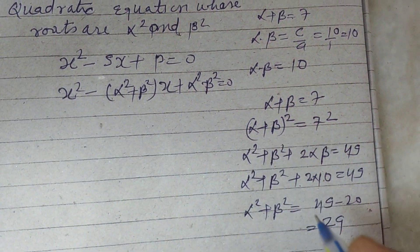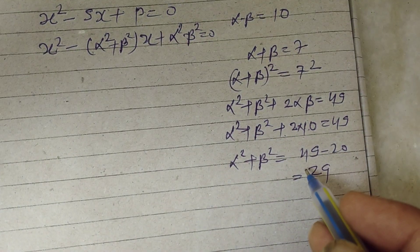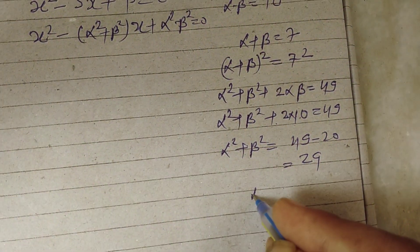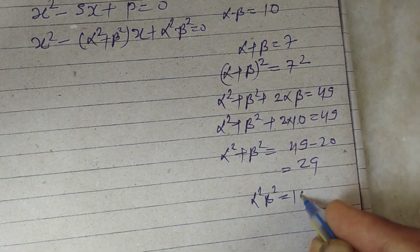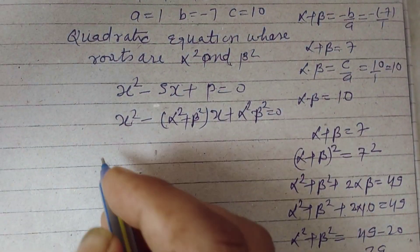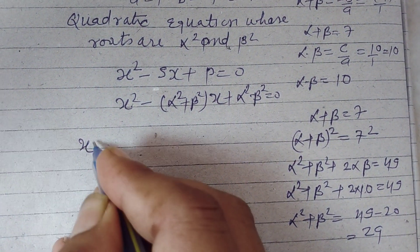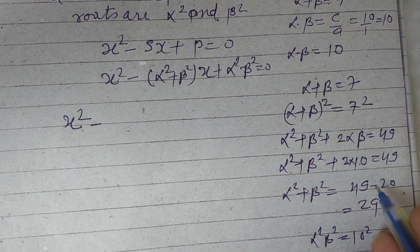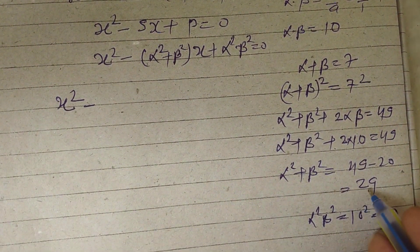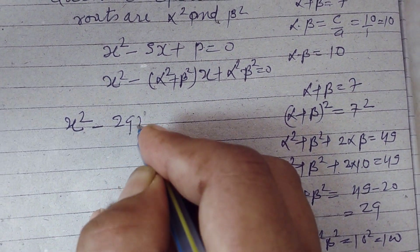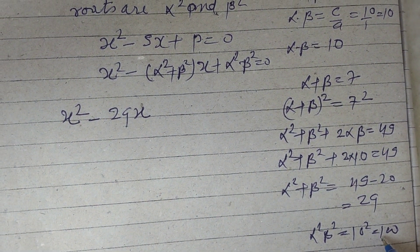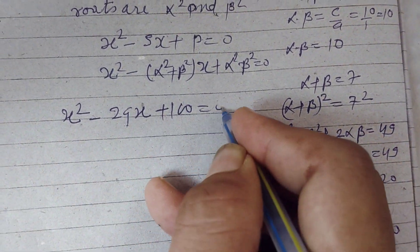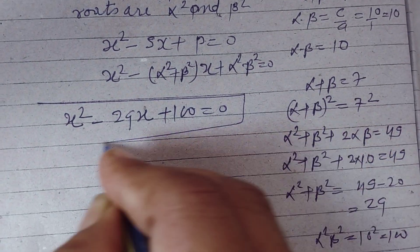Now, alpha squared into beta squared equals (alpha into beta) squared, which is 10 squared, that is 100. Substituting the values, the required quadratic equation is x squared minus 29x plus 100 equals 0.